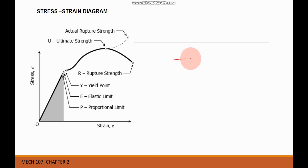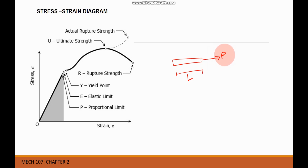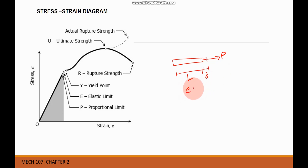For example, we have a bar with a certain length and a force P is applied to it. When the load is applied, there is a change in length — a deformation or elongation defined as delta. Therefore, strain is equal to the ratio of delta over the original length.